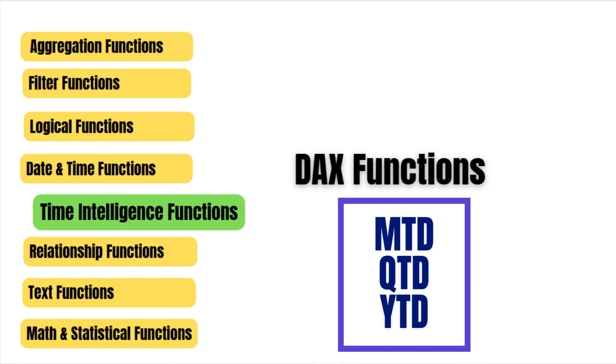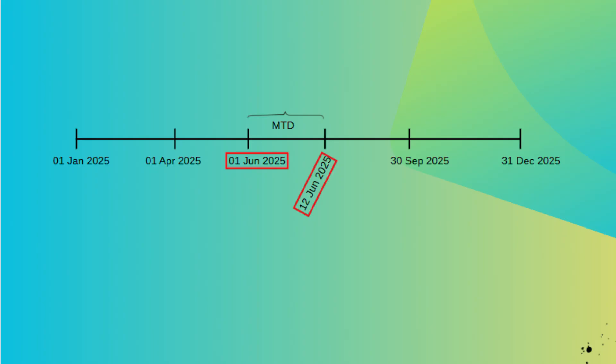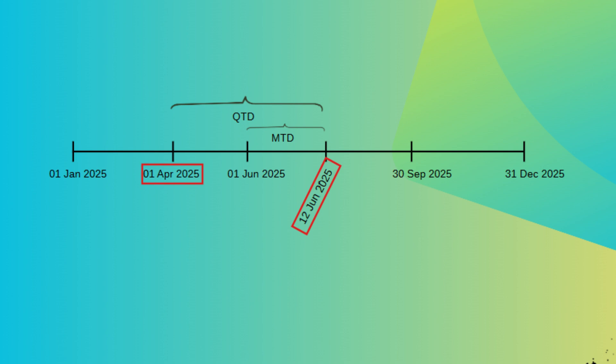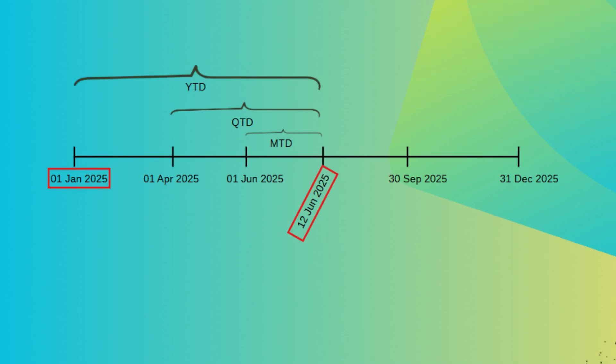Before jumping into DAX, let's quickly understand what MTD, QTD, and YTD mean. MTD — month-to-date — is the total from the start of the current month up to the date in the current context. For example, if we select 12th June, MTD returns values from the 1st to the 12th. QTD — quarter-to-date — is totals from the start of the quarter up to the selected date. YTD — year-to-date — is totals from the start of the year to the selected date. These are used to track performance during an ongoing period.